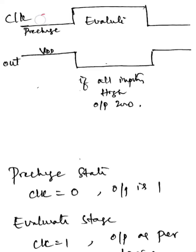When clock is 0, the output is VDD, meaning output is logic 1. When clock equals 1, it is the evaluate state and output will be evaluated as per the logic. If there is any path from the output that reaches ground, if any of the inputs is high, then the output will be 0.